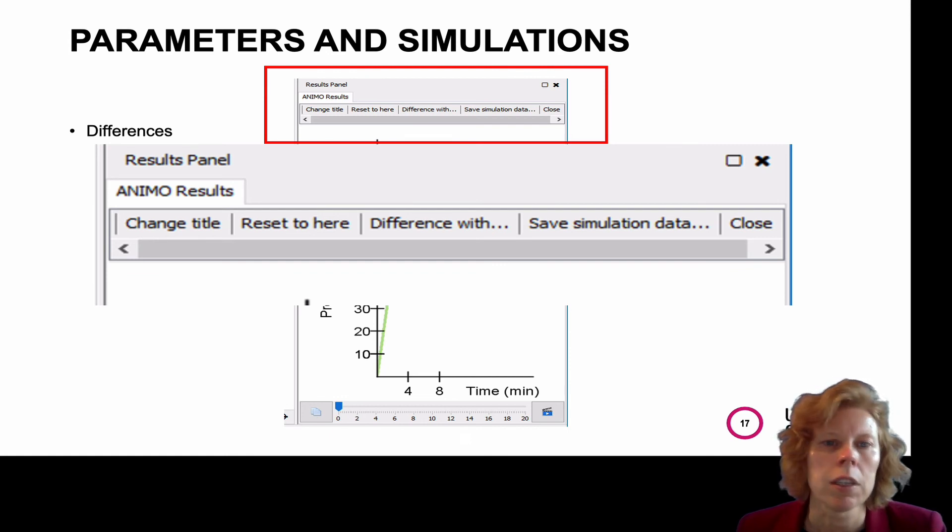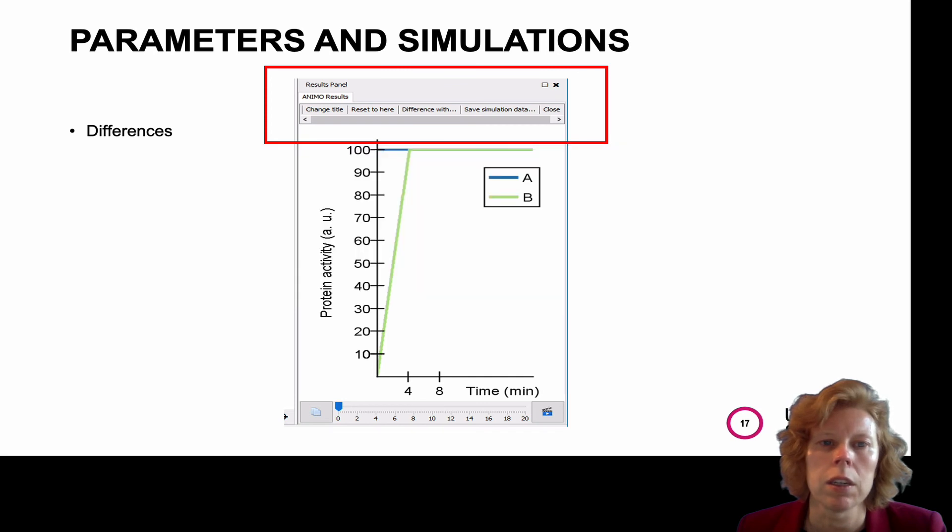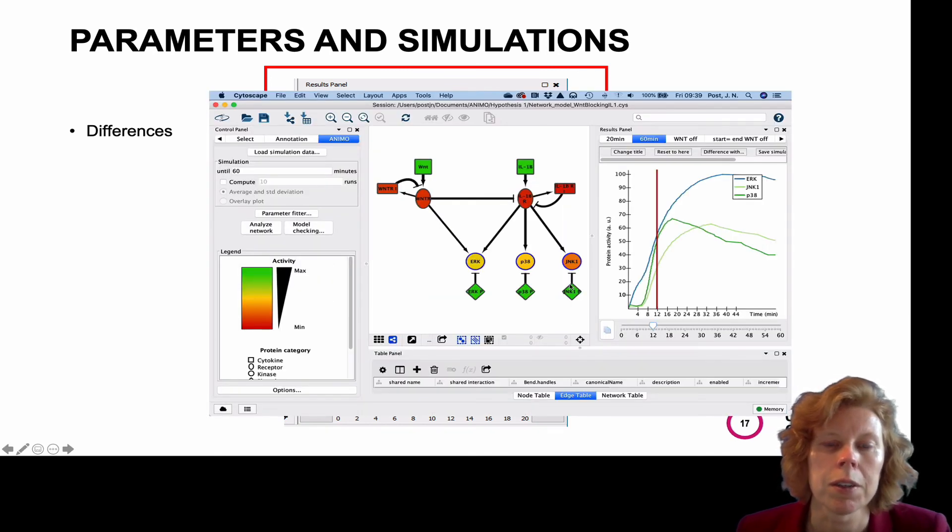Also, you can click. So here I used the slider to display the activity in my simulation of 60 minutes. I also did a simulation for 20 minutes. I turned Wnt off and all my results sections actually display the simulation I did.